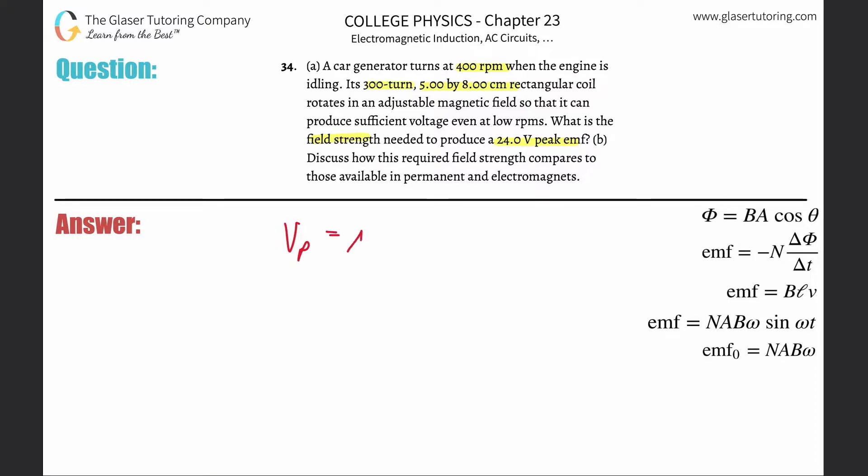That's going to be equal to the number of turns of the coil multiplied by the cross-sectional area that is experiencing the magnetic field, and multiplied by that external magnetic field strength, multiplied then by the angular velocity in radians per second.